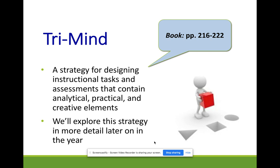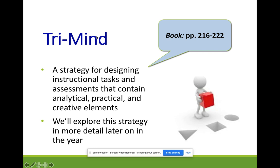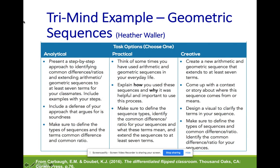Tri-Mind is a strategy based on the idea that we all have analytical, practical, and creative ways of thinking, but usually one is stronger. We want to present tasks that give kids a chance to enter in the way they think best. Sternberg, who developed this strategy, has research showing that when kids could pick the way they entered the task, they scored better on the analytical test at the end. Teachers often worry they can't give practical tasks because the test is analytical — but when students do a practical task, the information makes sense to them and they do better. All options should be labeled option one, two, three — they all reach the same learning goal through different means of thinking.